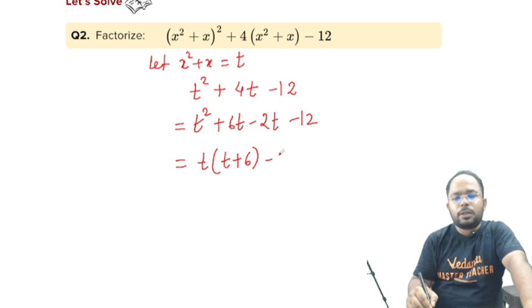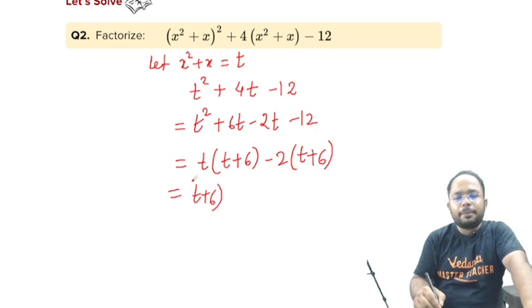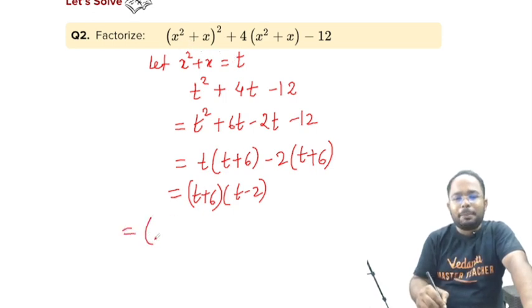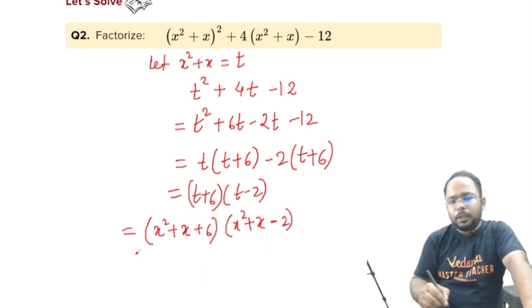t can be taken as common, t + 6, minus 2, we can take common. So t + 6. Ultimately, we are getting (t + 6)(t - 2). But this is not our answer because we have been asked in terms of x. We will just replace. (x² + x + 6)(x² + x - 2).